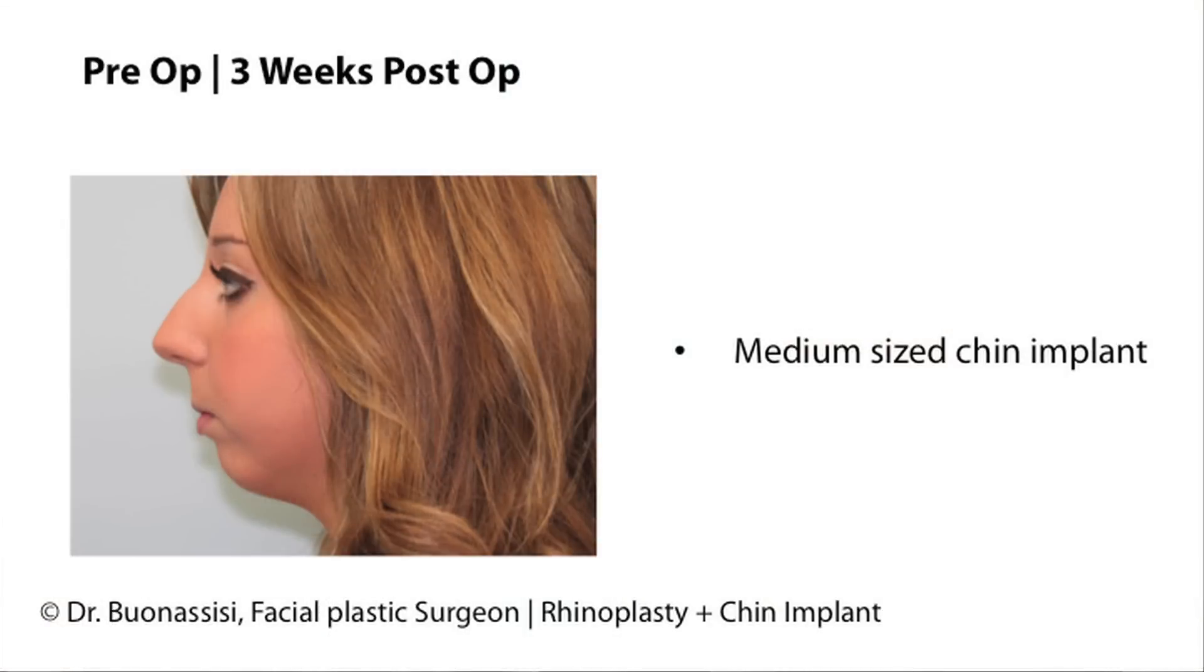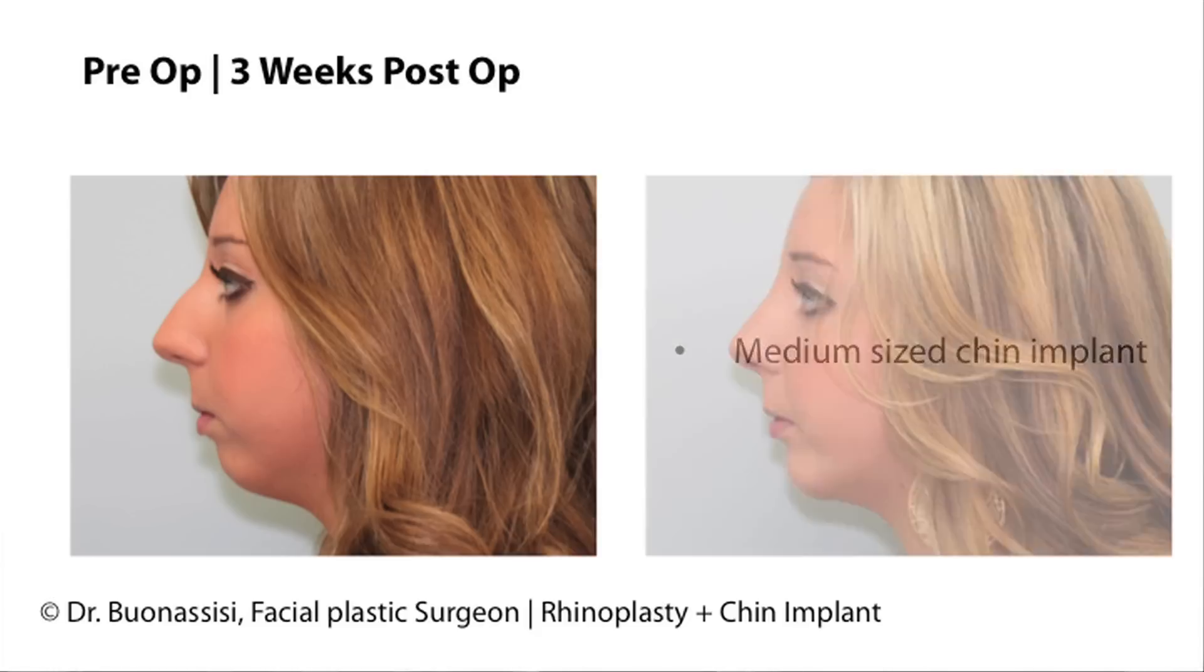So here's an example of a patient who required a chin implant. She has a slightly recessive chin, and you'll notice that it doesn't line up well with her forehead. It's sitting a little further back. So these are her results.